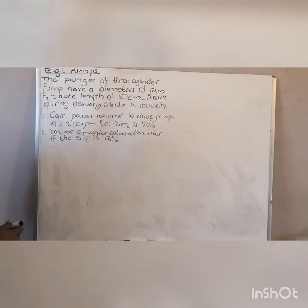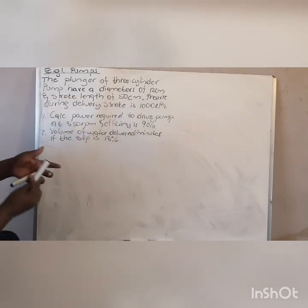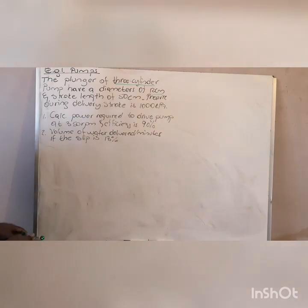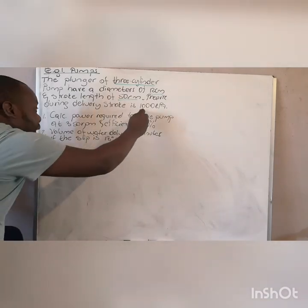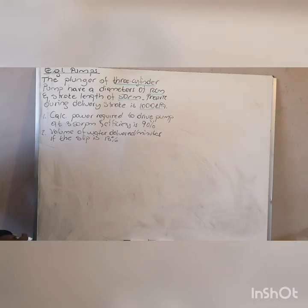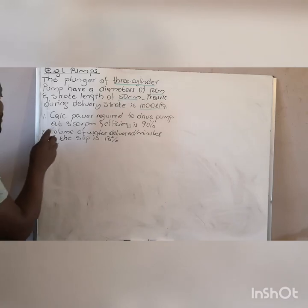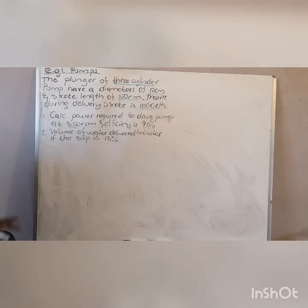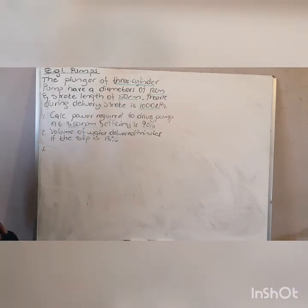They say this is a three-cylinder pump with a diameter of 12 centimeters, a stroke length of 50 centimeters, and a pressure of 1000 kilopascals. The first question says: calculate the power required to drive the pump at 350 revolutions per minute, if the efficiency is 90%. Everything highlighted with my green marker is your given data. When you solve problems in science, you first need to write your data down.